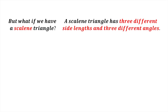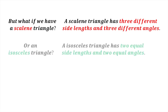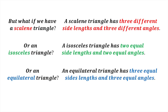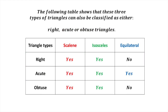But what if we have a scalene triangle with three different side lengths and three different angles? Or an isosceles triangle with two equal side lengths and two equal angles? Or an equilateral triangle with three equal side lengths and three equal angles? The following table shows that each of these types of triangles can also be classified as either right, acute, or obtuse triangles.